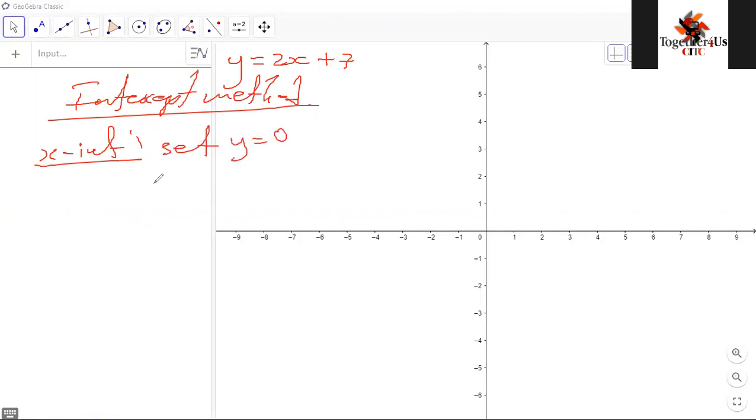In the equation y equals 2x plus 7, if I set y to be zero, I'm having 2x plus 7 equals zero. If I solve for x, then I see that x is actually negative 7 over 2.